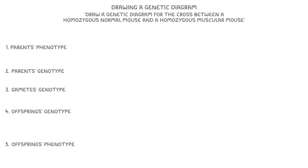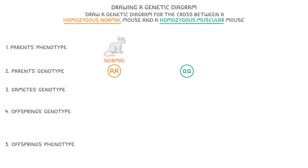In our example, we're told that one of the parents is homozygous for normal muscle, which means that the genotype will be capital A, capital A, and the phenotype will be normal. Meanwhile the other parent is homozygous for the muscular allele, so its genotype will be two lowercase a's, and even though this allele is recessive, it will still be expressed because it's homozygous, so the phenotype is muscular.